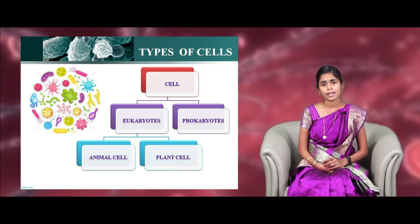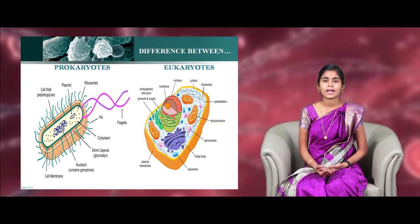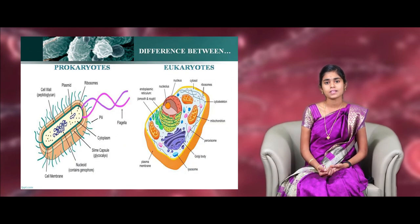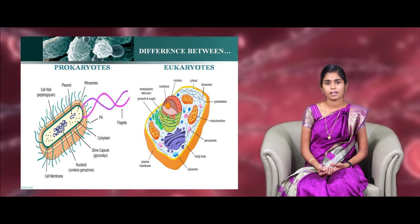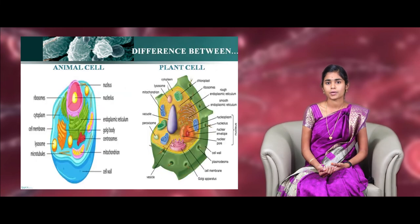And eukaryotes are further classified as animal cells and plant cells. In the comparison of prokaryotes and eukaryotes, just look into the picture in this slide. Prokaryotes are smaller in size with a size of 0.2 micrometer to 2.0 micrometer. Whereas, eukaryotes are larger in size with a size of 10 micrometer to 100 micrometer. Nucleus, mitochondria and endoplasmic reticulum are absent in prokaryotes. But, these are present in eukaryotes. Ribosomes are smaller in prokaryotes and larger in eukaryotes. DNA is circular in prokaryotes whereas it is linear in eukaryotic organisms.